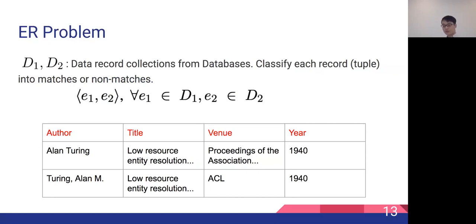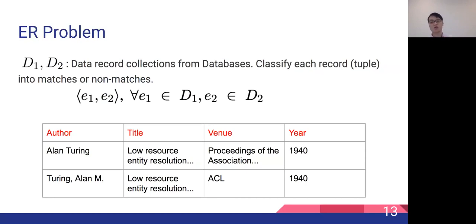Before discussing our approaches, we formalize the problem of entity resolution. Given two sets of data record collections from two databases D1 and D2, we classify each pair E1 and E2 in the Cartesian product D1 cross D2 into matches and no-matches. Each record is represented as a tuple with attributes such as author, title, and year in the case of citations. D1 and D2 can be the same single database, in which case we have the special case called duplicate detection within a single database.